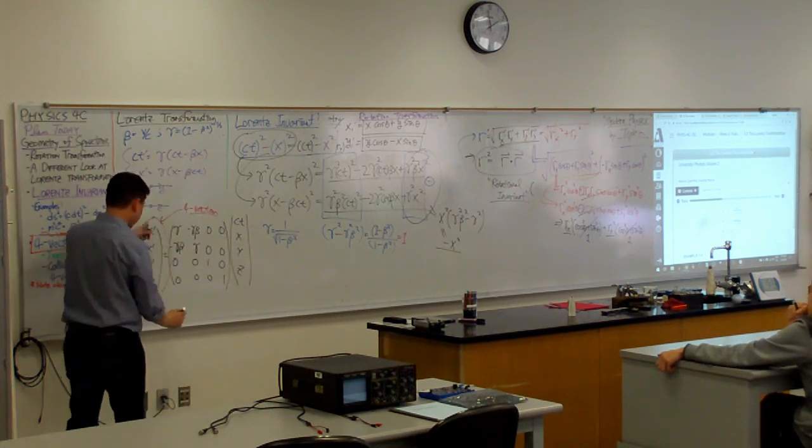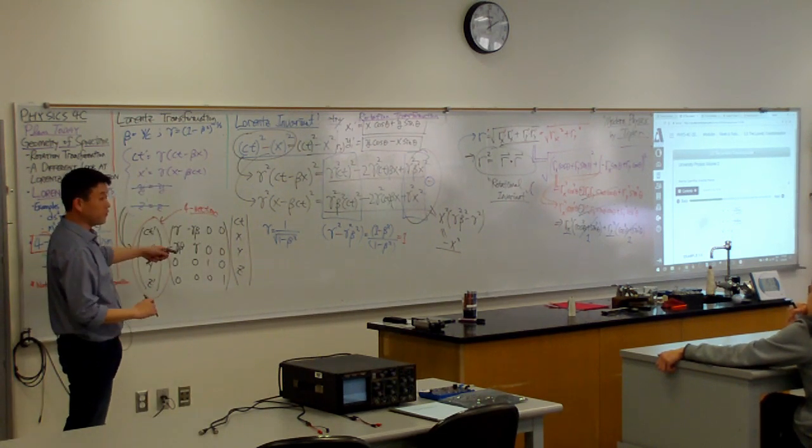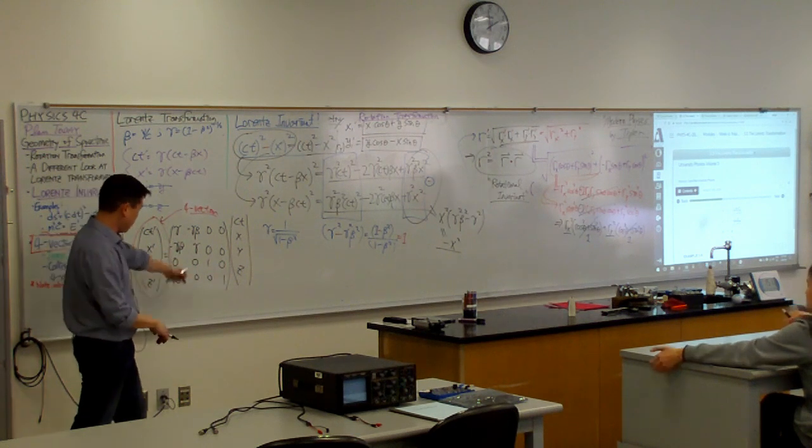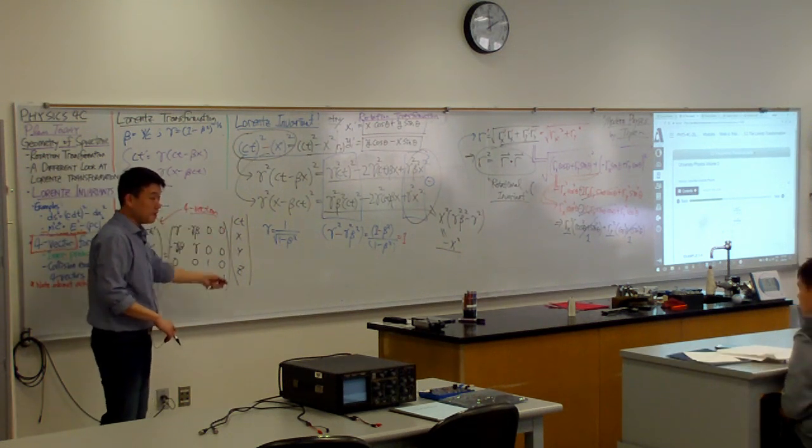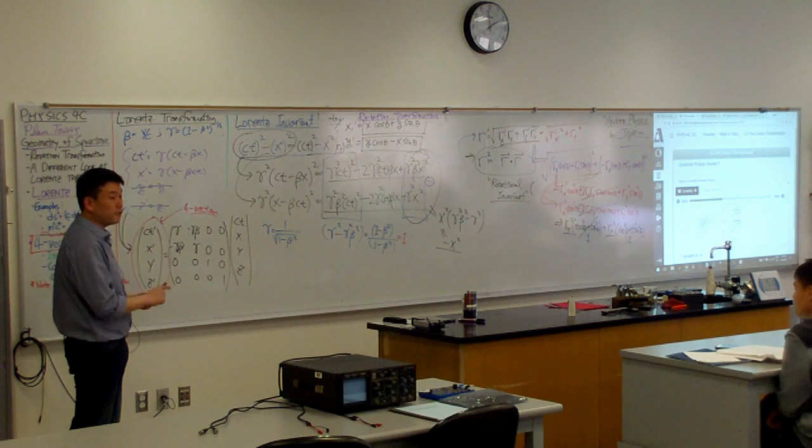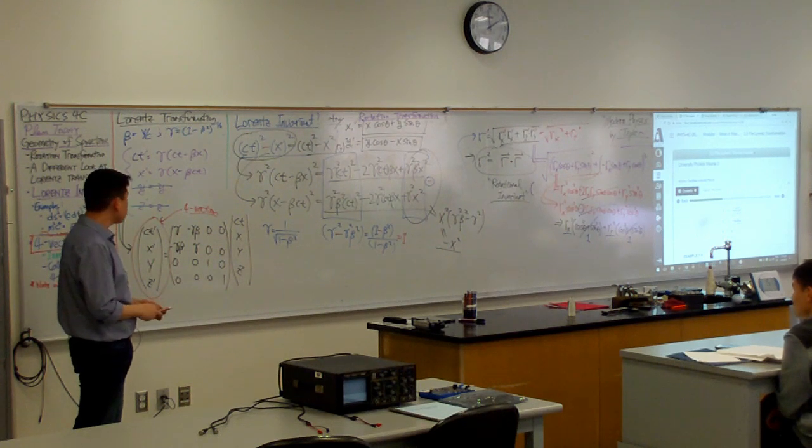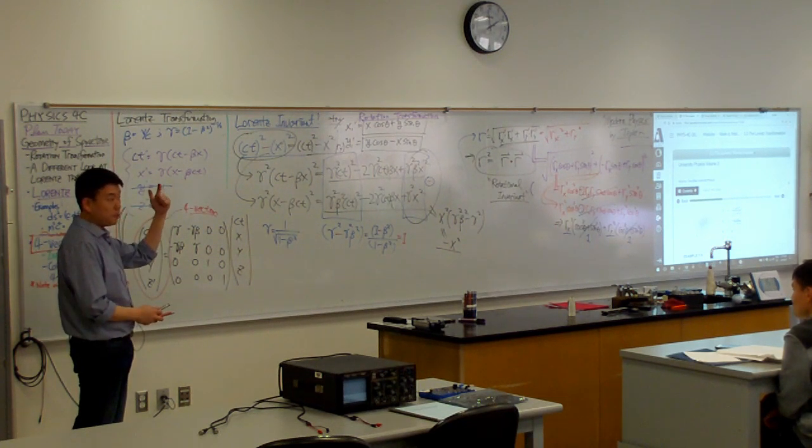And we call it four vector because it transforms under boost, like under Lorentz transformation. And I will give you an example of one more four vector that's going to be formed out of energy and momentum.